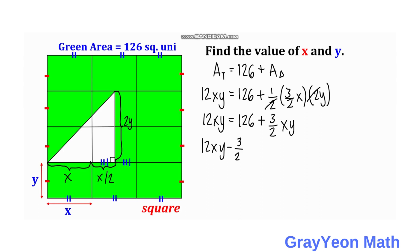We can cancel this out. 12xy equals 126 plus the area of the triangle. We get the LCD which is 2, then 12 times 2 equals 24. So 24xy equals 126 times 2 plus 3xy. Dividing both sides by 21, we have the value of xy equal to 12.